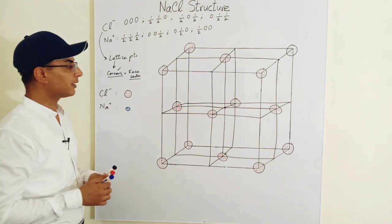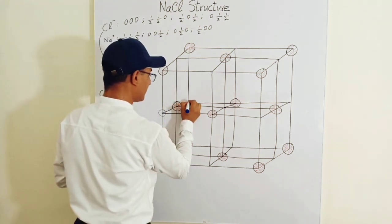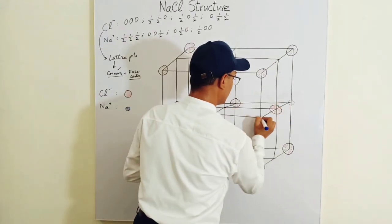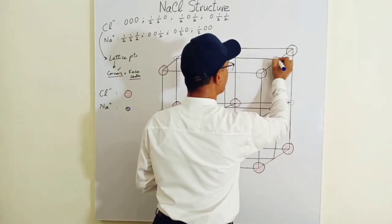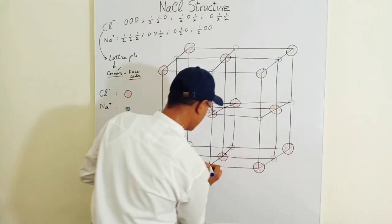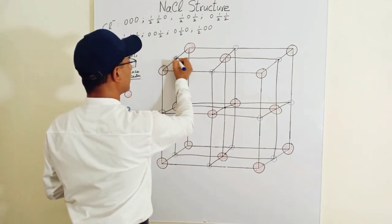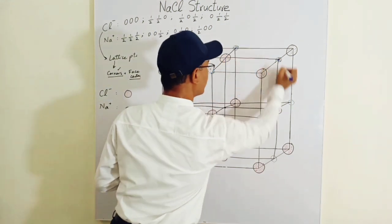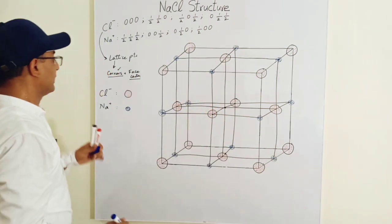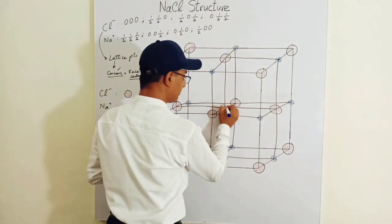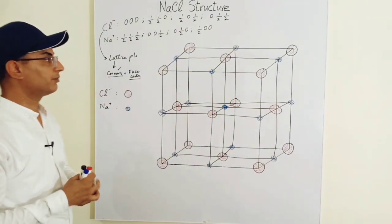Now for the sodium ions — they are located at the mid-edges. There is one mid-edge over here, one mid-edge over here, and wherever there is a mid-edge, draw a sodium ion. Color them in blue. Now, the sodium ion is also located at the body center. This is the point of the body center — just place one sodium ion at the center of the body.